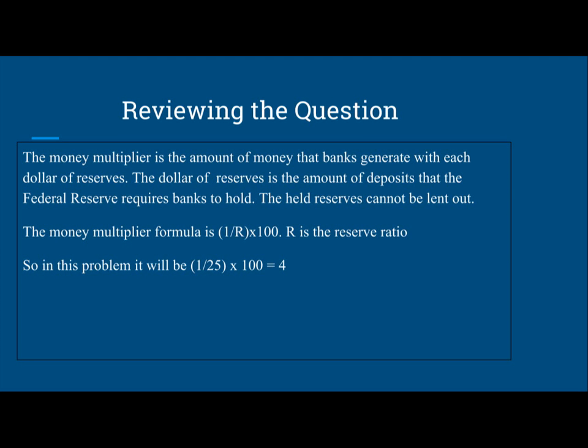Now let's go review the question. The money multiplier is the amount of money that banks generate with each dollar of reserves. The dollar of reserves is the amount of deposits that the Federal Reserve requires banks to hold. The held reserves cannot be lent out.